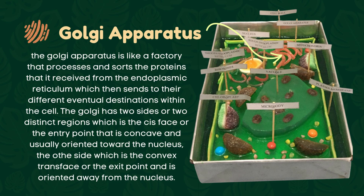The Golgi apparatus is like a factory that processes and sorts the proteins received from the endoplasmic reticulum, then sends them to their different destinations within the cell. The Golgi has two distinct regions: the cis phase, or entry point, which is concave and oriented towards the nucleus, and the trans phase, or exit point, which is convex and oriented away from the nucleus. If zoomed in correctly, you can see that our material also has two phases matching these distinct characteristics.